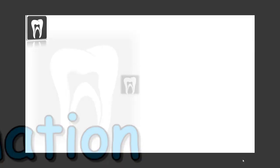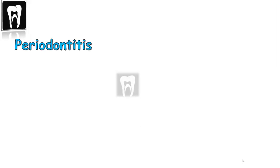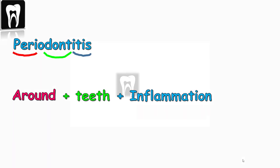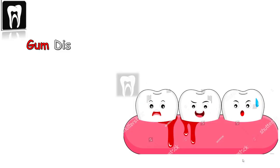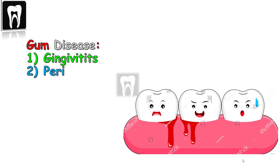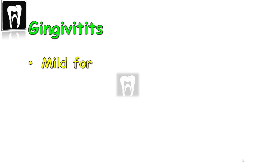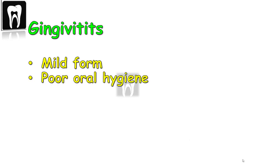Periodontitis: 'peri' means around, 'dont' means teeth — it is inflammation in the structures around the teeth. Gingivitis and periodontitis are both gum disease, or we call them periodontal disease — the disease that's around the tooth. Gingivitis is the mild form of gum disease. The most common cause is poor oral hygiene.